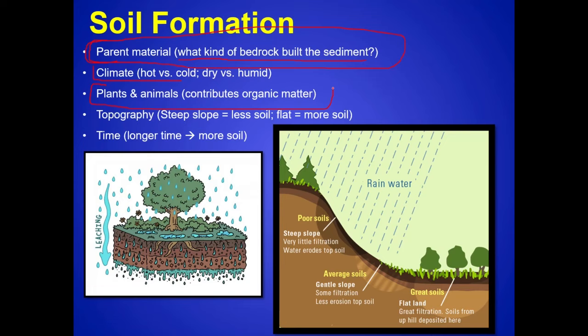If you want to improve a soil, the best way to make it more fertile is by adding well-rotted, well-decomposed organic matter. That is called humus.